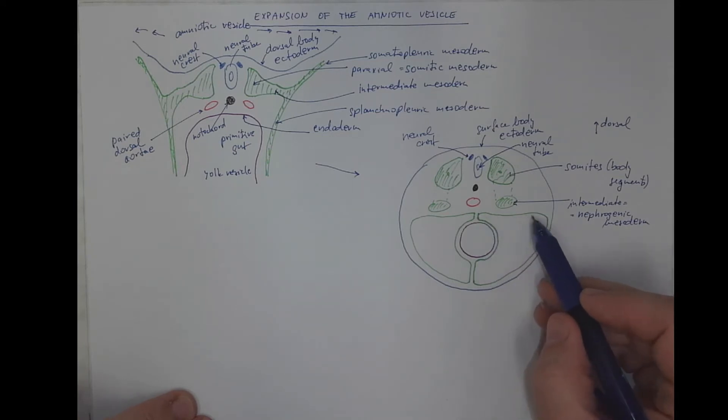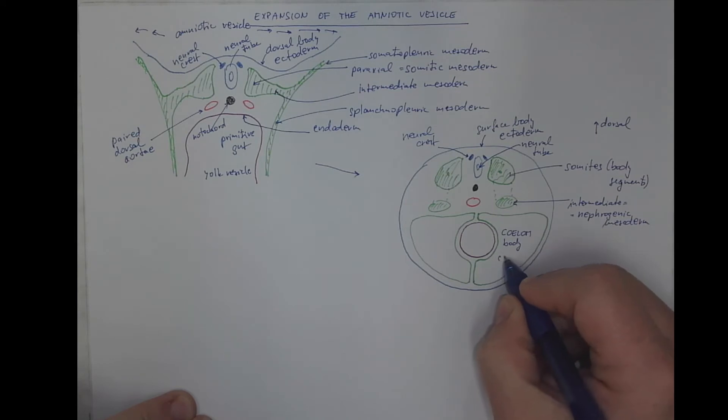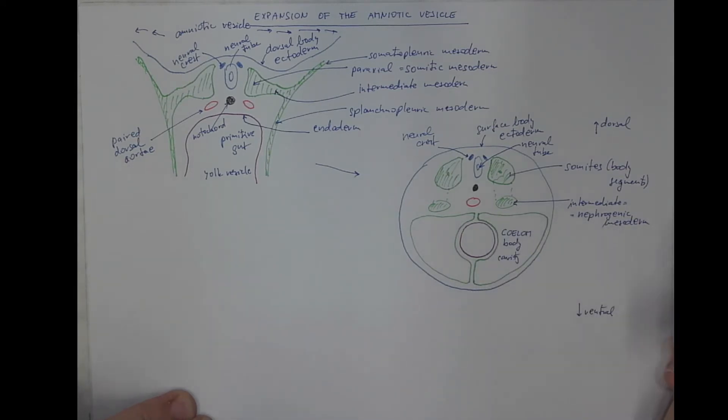And what about the mesoderm of the somatopleuric and splanchnopleuric layer? It encircles the coelom cavity.